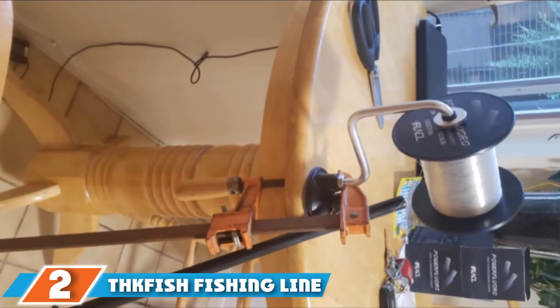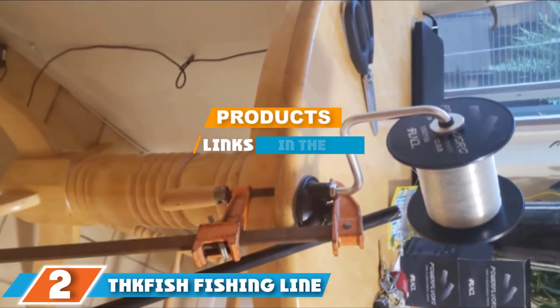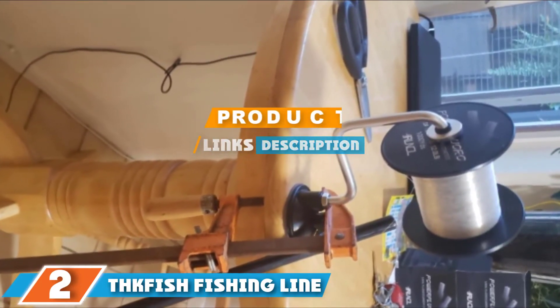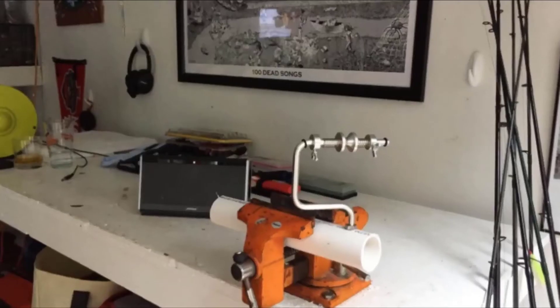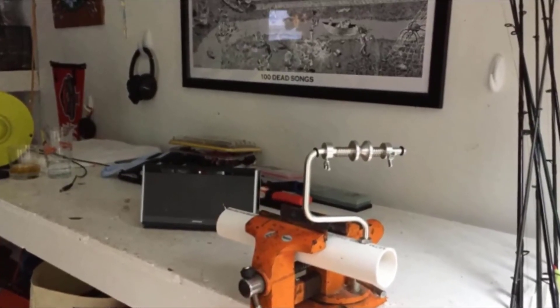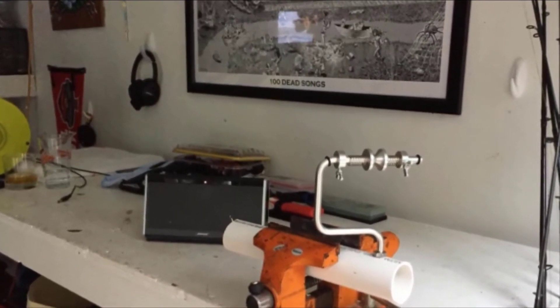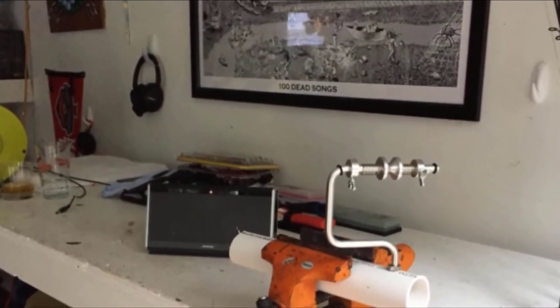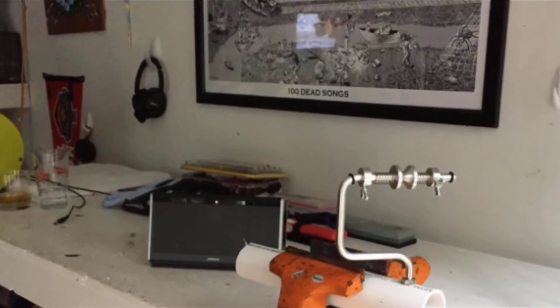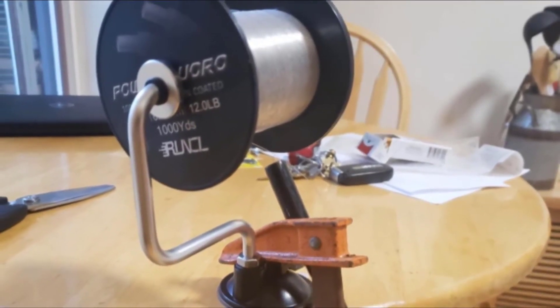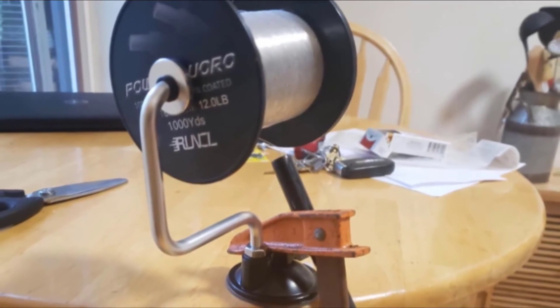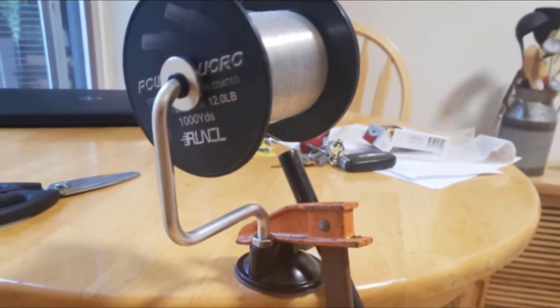Next at number two we have ThickFish fishing line spooler. Featuring an adjustable design, the ThickFish fishing line spooler makes it easier to remove and install to ensure the line is tight. Additionally, the line spooler features fastening frames and adjustable clamps to help you customize line tightness. The foldable spool station is fitted with a strong suction cup that holds the device securely and works great on any surface.